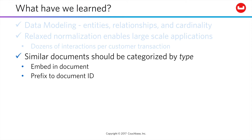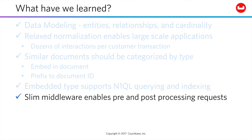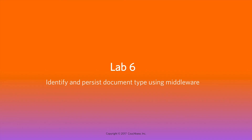Similar documents should be categorized by type. You can do so by either embedding type in a document or prefixing type to the document ID. In our labs, we're doing both — you would pick the model that works best for you for a production system. If you embed the type, this supports N1QL querying and indexing and ends up being very useful over time. In the lab, you're going to identify document types based on the path of the incoming request, write code to extract this value as middleware, and then pass the attribute along so that the document type can be persisted with the documents, both based on a key pattern as well as an embedded type reference.